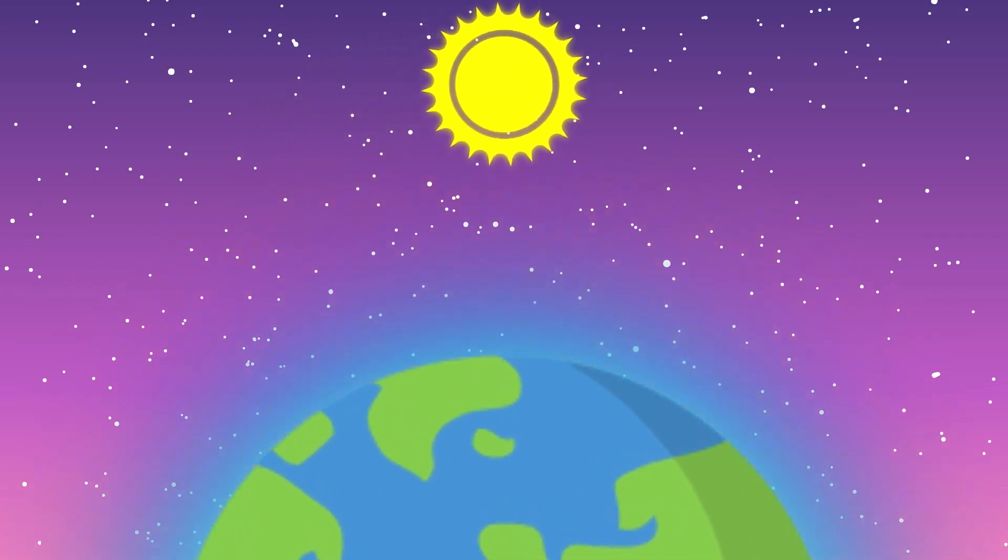But when the sun is directly above Earth, the light doesn't need to travel through nearly as much atmosphere and scatters in all directions, which makes the whole sky appear blue.